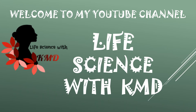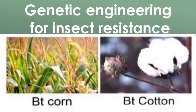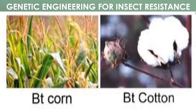Welcome to Life Science with KMD. Today I'm going to explain about genetic engineering for insect resistance. There are two approaches: one is incorporating the delta endotoxin sequence from Bacillus thuringiensis, or the second one is incorporating plant-derived genes like lectins, proteinase inhibitors, etc.